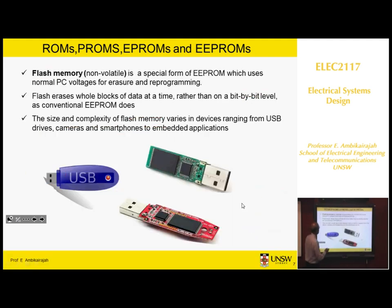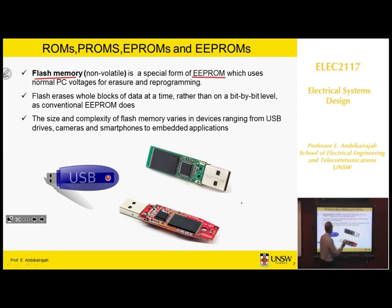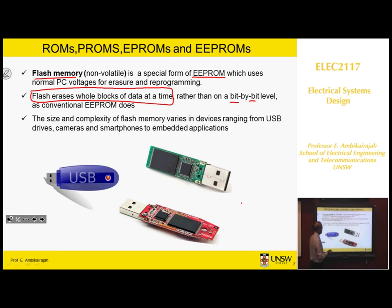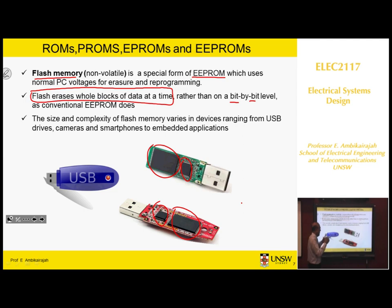The most recent type is flash memory, which is a special form of EEPROM. With EEPROM, erasing is done bit by bit, but with flash memory you erase a block of data at a time. All USB devices have flash memory, which is very popular and can be manufactured very small. The latest ones have 64 or 128 gigabytes of data in a small device — that's flash memory.